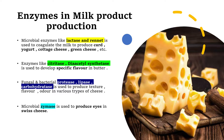Enzymes like citratase and diacetyl synthetase are used to develop specific flavors in butter. The sweet, mild flavor of butter is due to a compound known as diacetyl, which is produced by the microbial enzyme diacetyl synthetase. Citric acid is converted into diacetyl through the action of both citratase and diacetyl synthetase, making them important enzymes for flavor development in milk products.